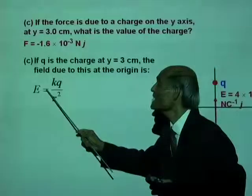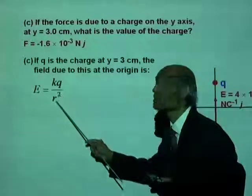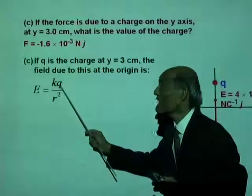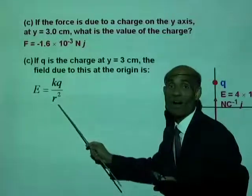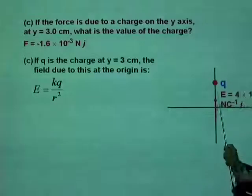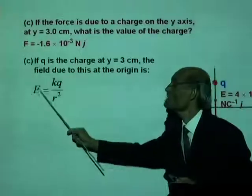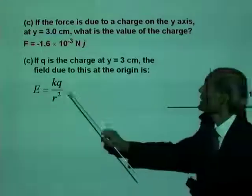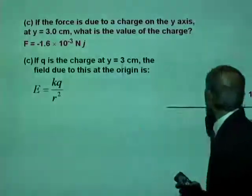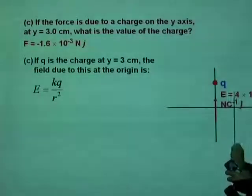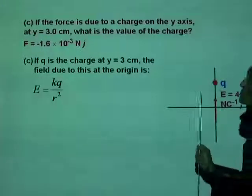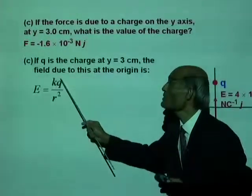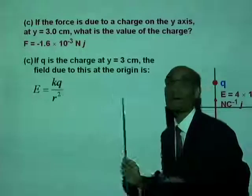We want to answer that. You know that E equal to kQ over r squared, where Q we need to find. What is r? r is 3 meters. And E we know — the electric field at the origin. So E is 4×10⁵ Newton per coulomb, r is 3 meters, k we know. Therefore we can find Q.